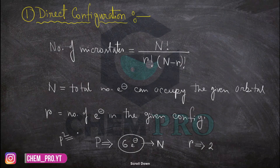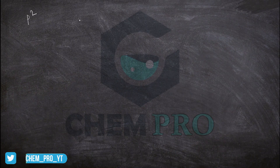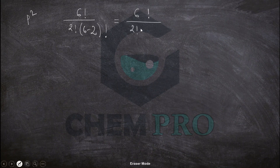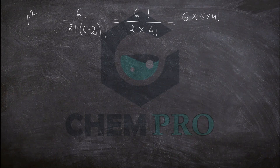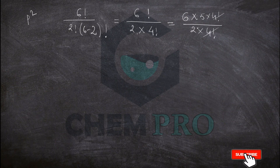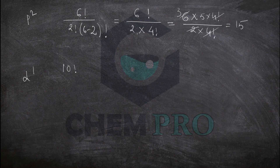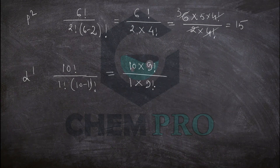For p2: number of microstates = 6! / (2! × (6−2)!) = 6! / (2! × 4!) = (6 × 5 × 4!) / (2 × 4!) = 15. So p2 has 15 microstates. For d1: total electrons for d is 10, so it is 10! / (1! × 9!) = (10 × 9!) / (1 × 9!) = 10 microstates.